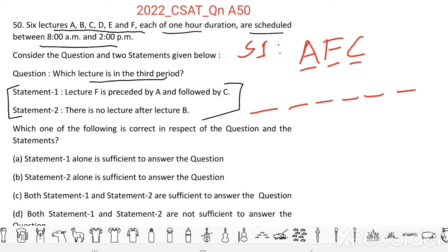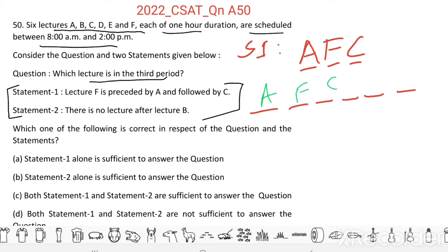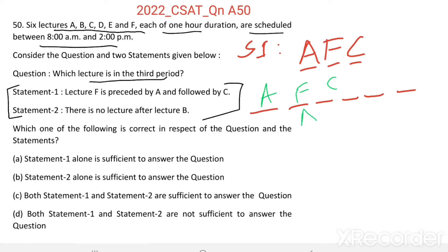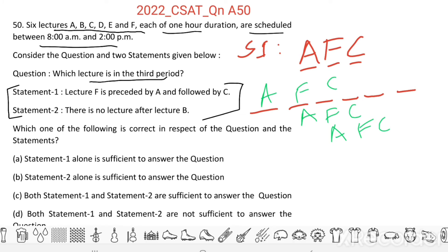This block can be placed anywhere in the six-period duration. So if I keep A, F, C starting from period one, then in the third period it is C. If I keep A, F, C starting from period two, then the third period is F. And if I keep A, F, C starting from period three, then the third period is A.